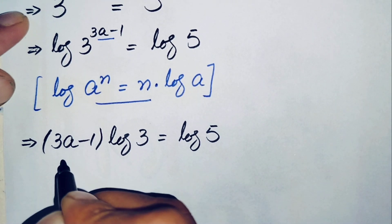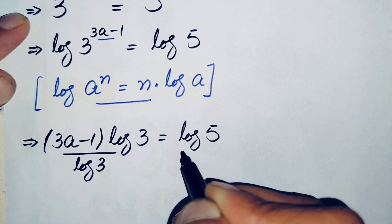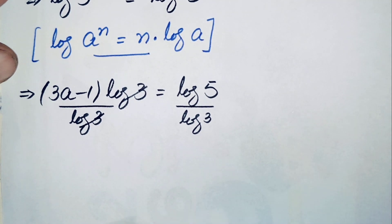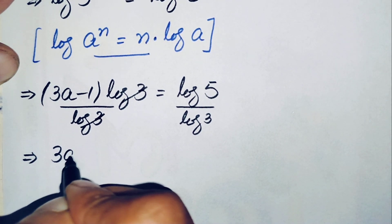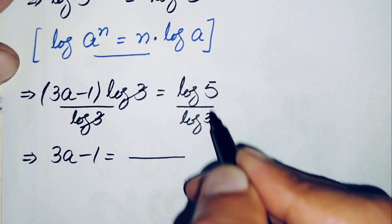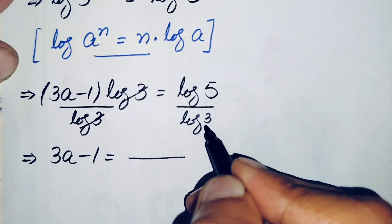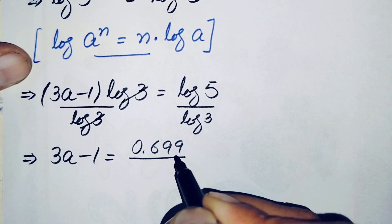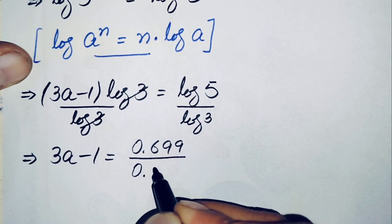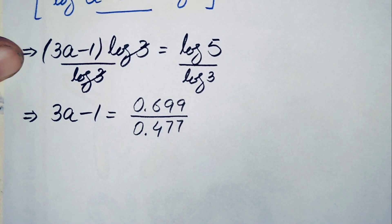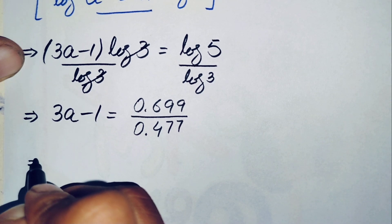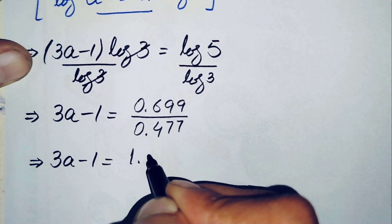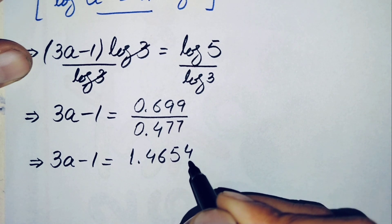Now we will divide both sides by log 3 to eliminate it from the left-hand side. The log 3 terms cancel, leaving only 3a minus 1 on the left. On the right-hand side we substitute the values: log 5 is approximately 0.699 and log 3 is approximately 0.477, both to 3 decimal places. Dividing these gives approximately 1.4654 to 4 decimal places.